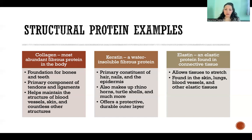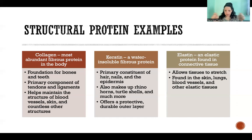Keratin also makes up rhino horns, turtle shells, and all sorts of other features found in the animal kingdom, offering a protective, durable outer layer. Elastin is an elastic protein — exactly what it sounds like — also found in connective tissue. It allows tissues to stretch, so we find it in any connective tissues that need to be elastic. The primary areas include the skin, lungs, blood vessels, and other elastic tissues. These are examples of structural proteins — proteins that make up parts of the body.